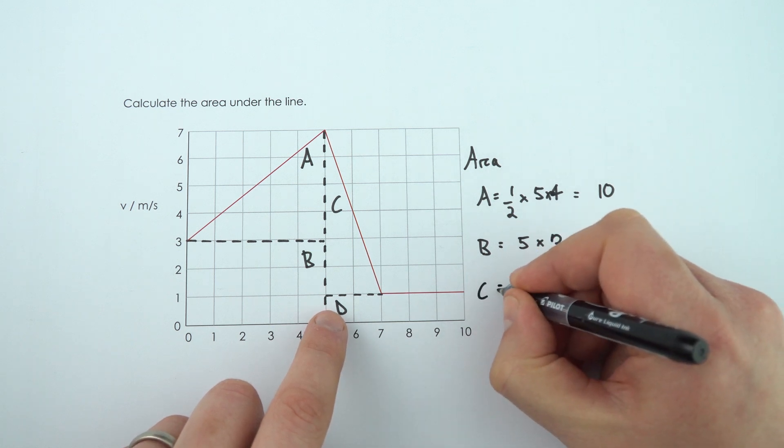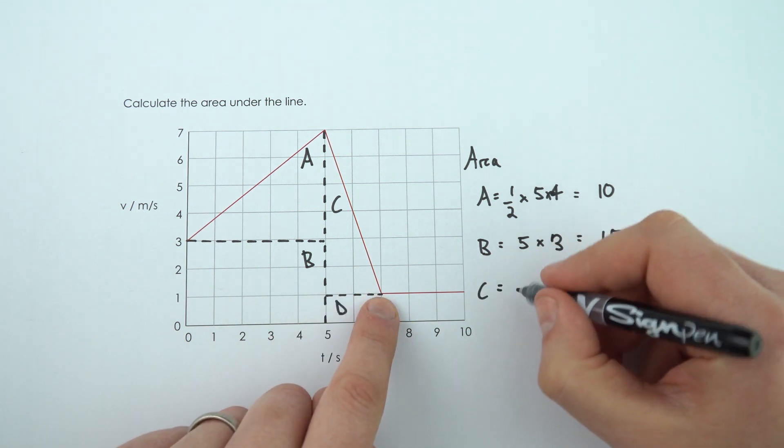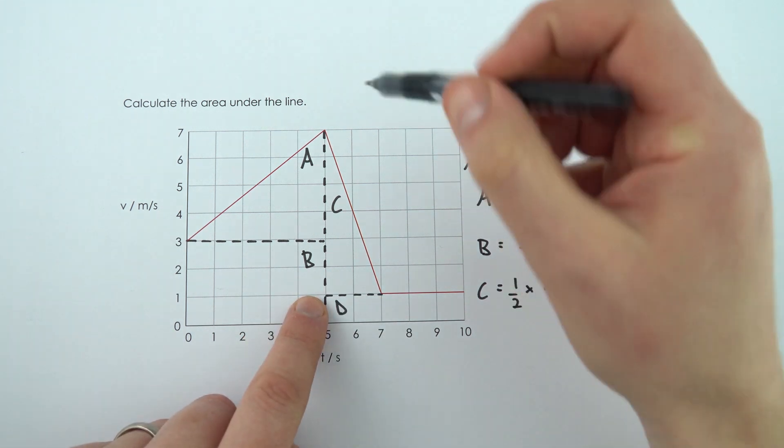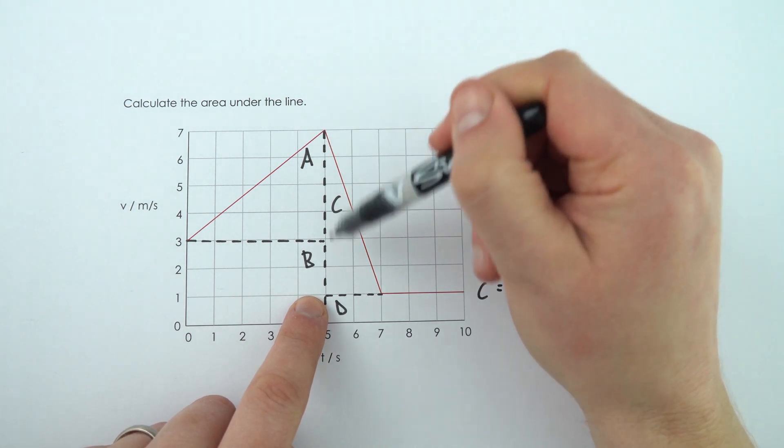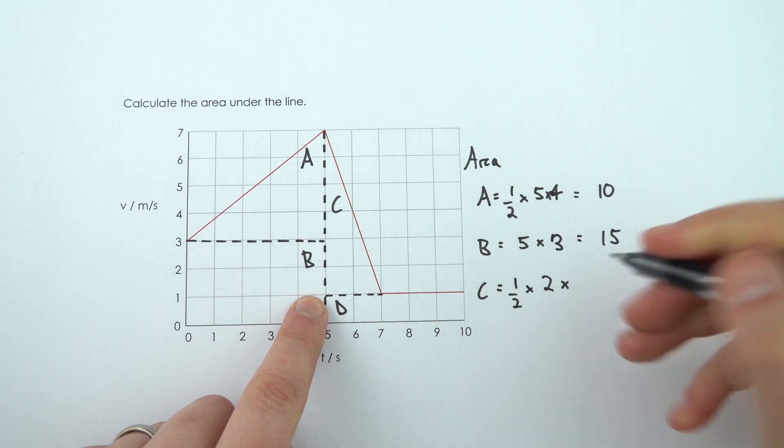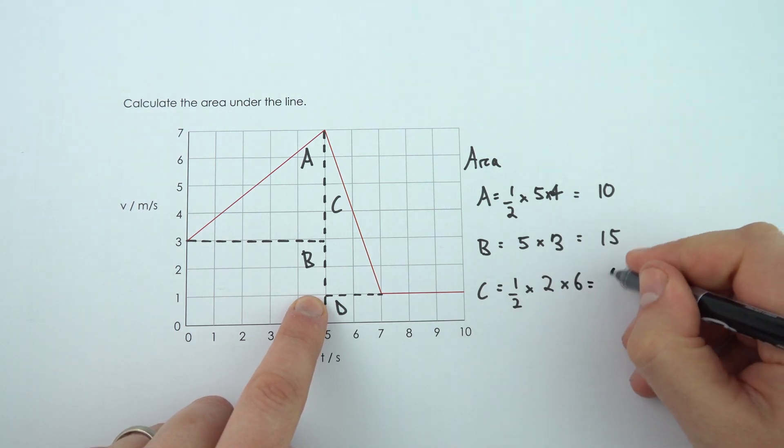Area C is another triangle, and here the base goes from 5 to 7. So a half of the base is a half times 2 multiplied by the height. Now the height goes up to 7 but it starts at 1. So 7 take away 1 is 6. 2 times 6 is 12, so half of 12 is equal to 6.